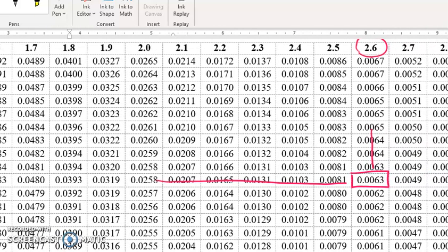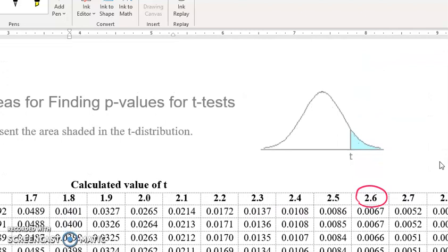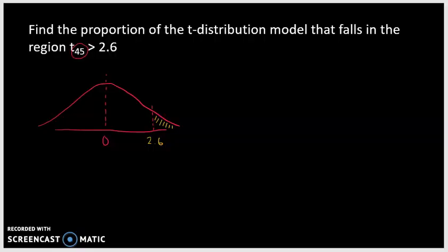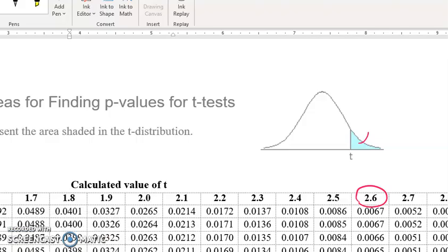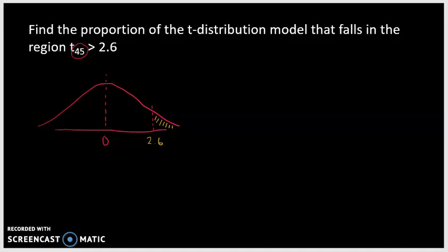You have to keep in mind what this table is giving you. This table gives you the region that falls in the tails — in other words, the region that falls above 2.6 in this case. That value is 0.0063. So that proportion, or as a percentage, would be 0.63%.